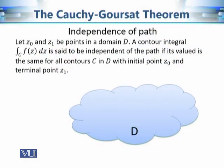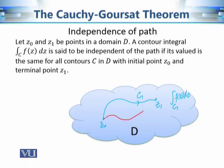Let's see precisely what the notion of independence of path means. If we have a point z₀ in a simply connected domain d and another point z₁ in the same domain, and we evaluate a contour integral along contour c₁, then the answer is going to be the same if we take any other contour c₂. A contour integral is said to be independent of path if its value is the same for all contours c in d with initial point z₀ and terminal point z₁.